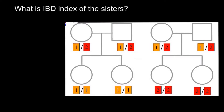Hello and welcome to Nikolai's genetics lessons. This video is going to be about bioinformatics, and I'm going to show you how to find the IBD index, or identical by descent, for two pairs of sisters. We have to find the IBD indexes — so what is the IBD index and what do we need it for?